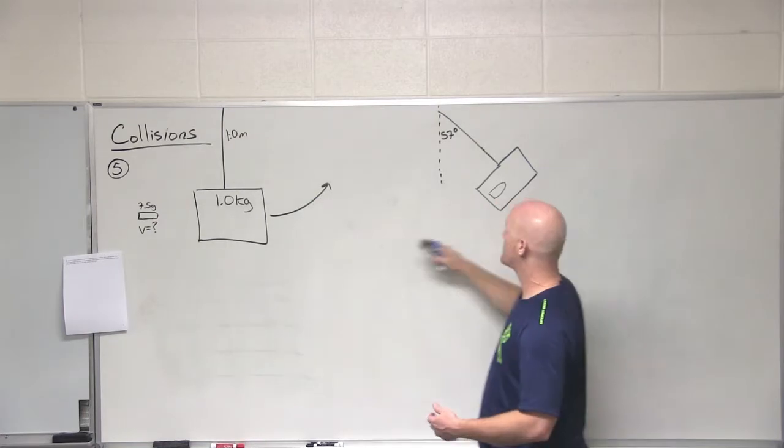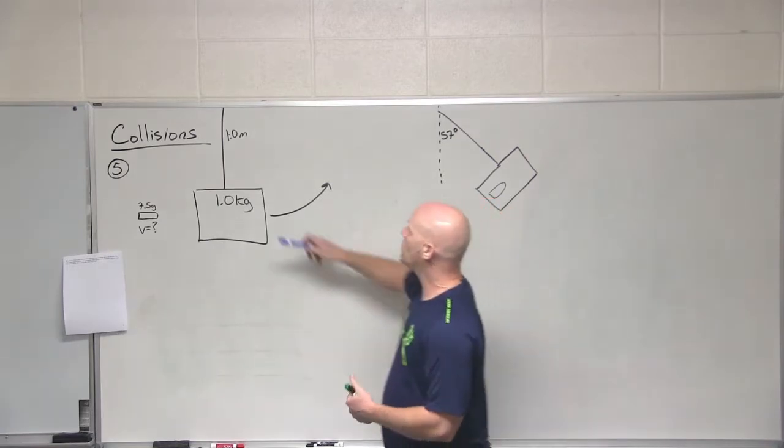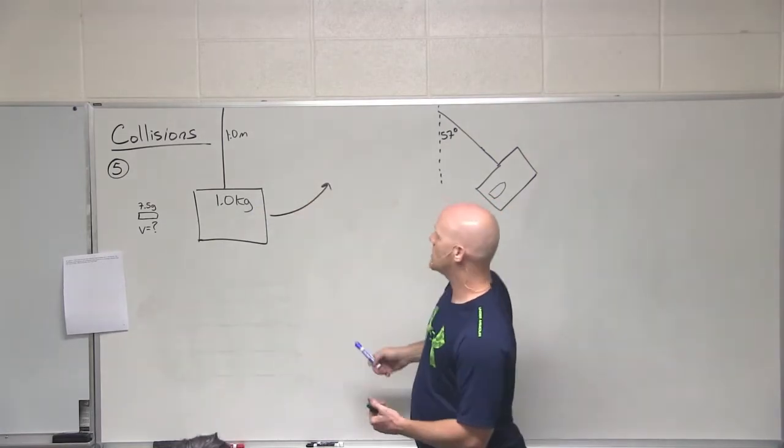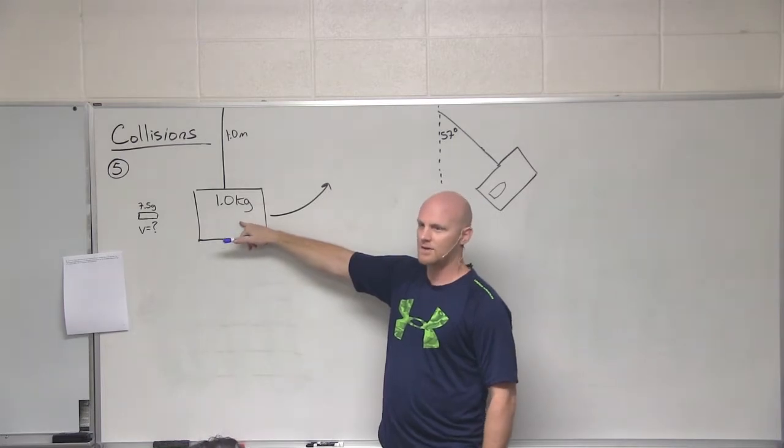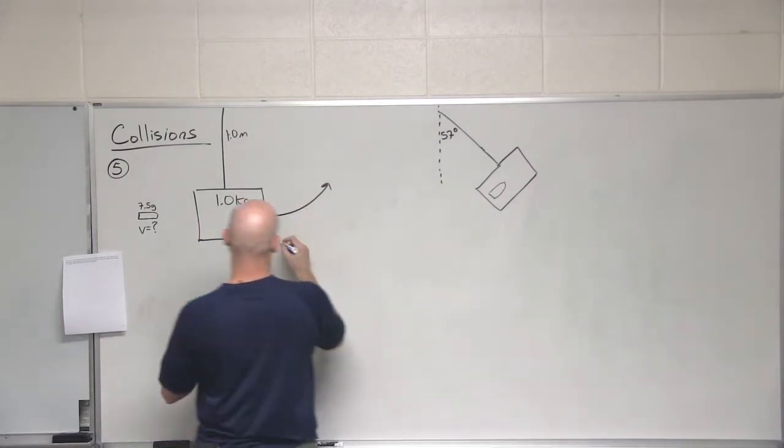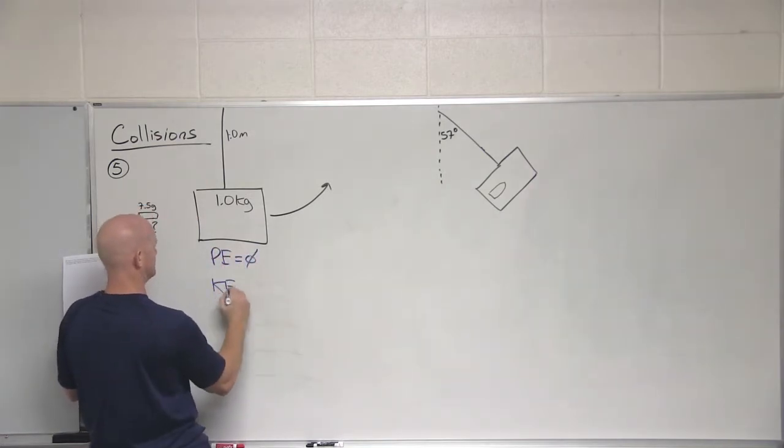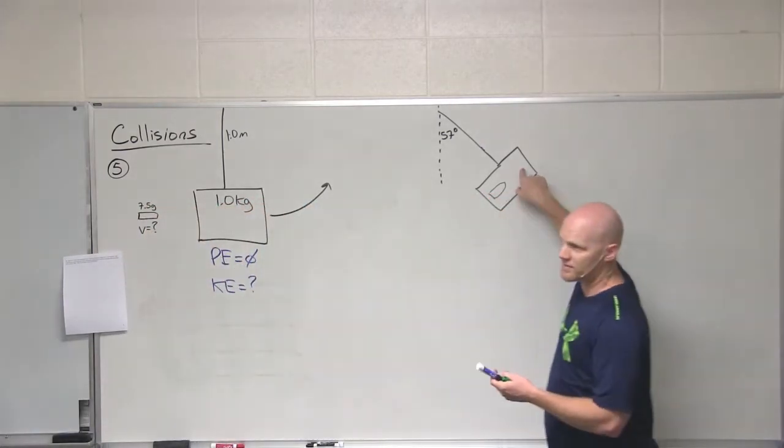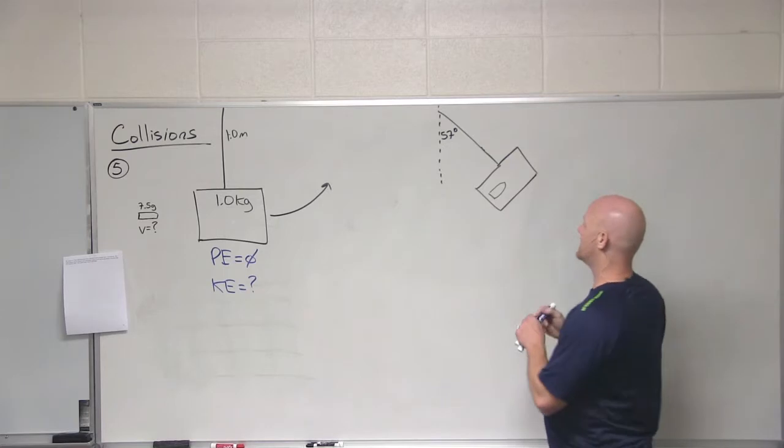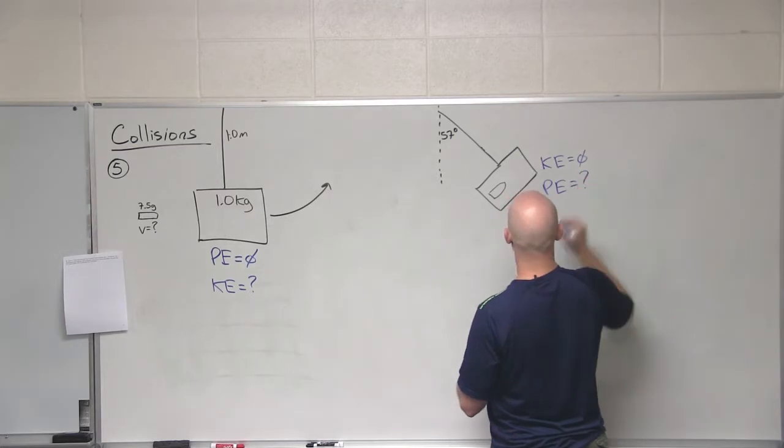Actually, I guess we'll work this backwards since we don't know the velocity. So the second part of the problem, conservation of mechanical energy. So we have this one meter chord. This is its lowest point. Then at this point, I will assume it has zero potential energy. But we'll figure out how much kinetic energy it has. Now, this is its highest point. So here, I will assume kinetic energy zero. And its potential energy is at a maximum. We need to figure out what that is.